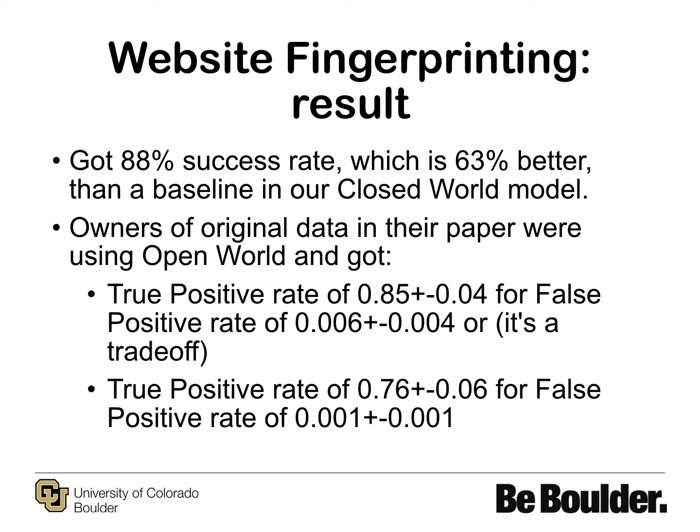The open world model has true positives, true negatives, along with false positives and false negatives, so they could vary parameters of their model to get different rates. This is basically a trade-off between minimizing false positives and maximizing true positives. Their true positive rate is generally lower than ours, but it is not reasonable to directly compare closed world and open world, and we could not say that our model is better than theirs. However, we still have room for improvement, which would be further discussed later — and all in all, we got a very good result.